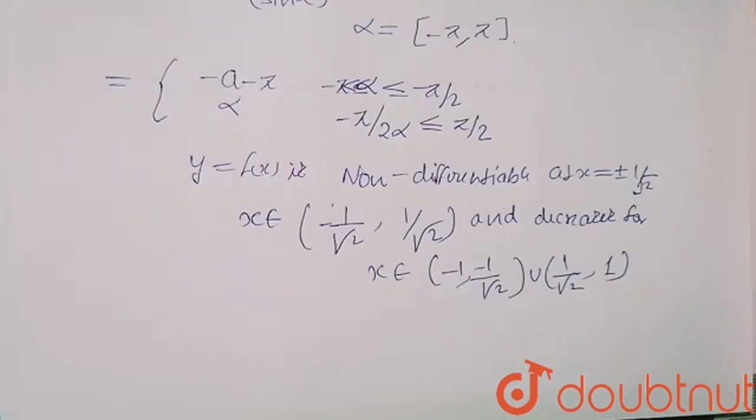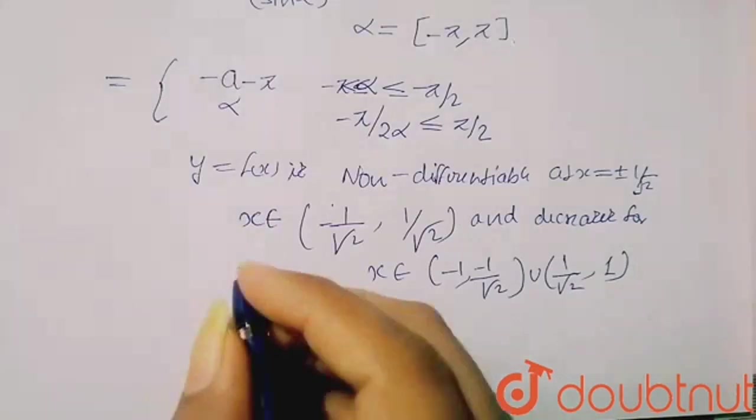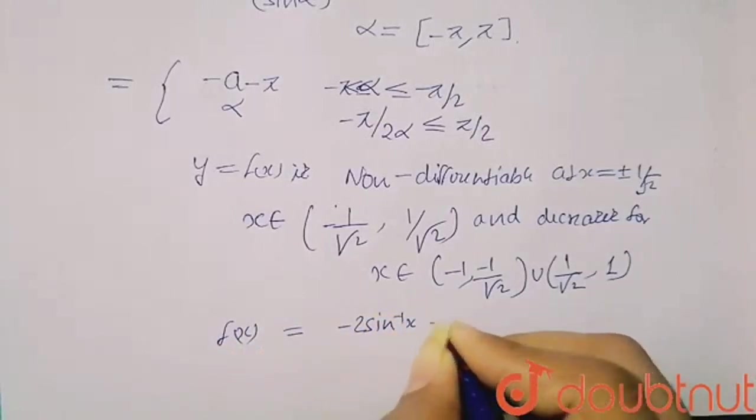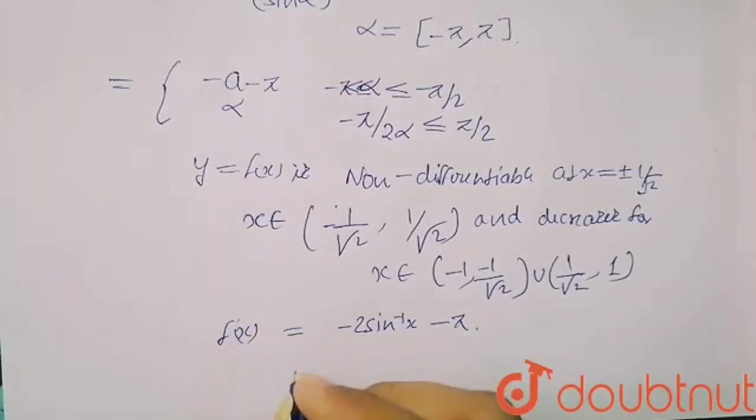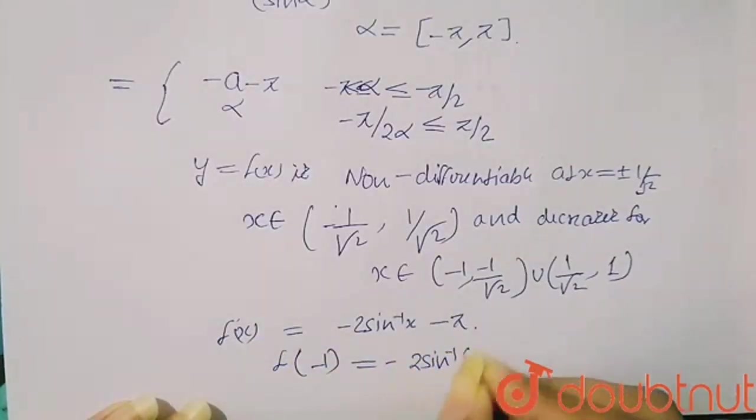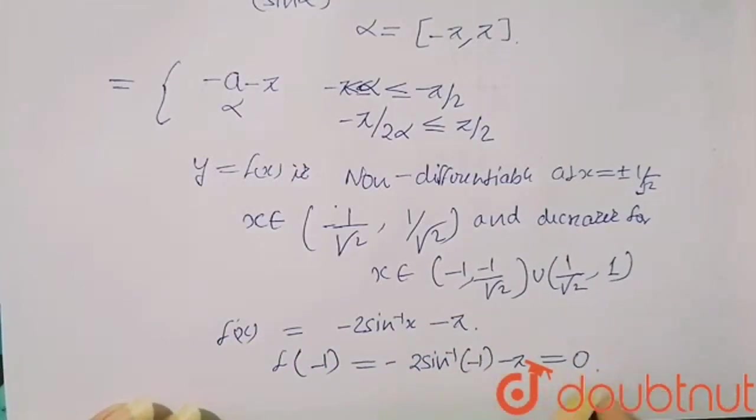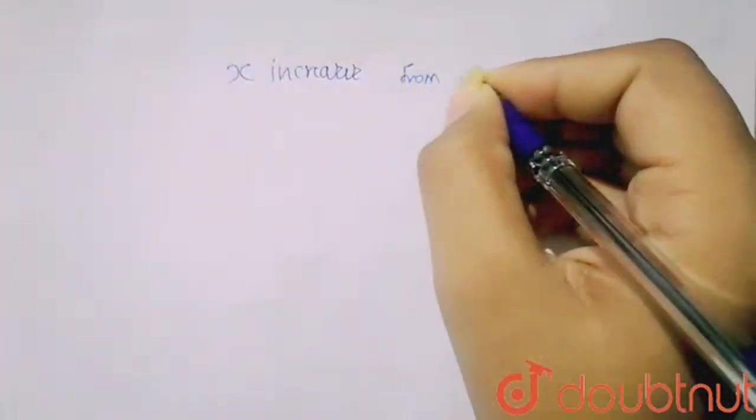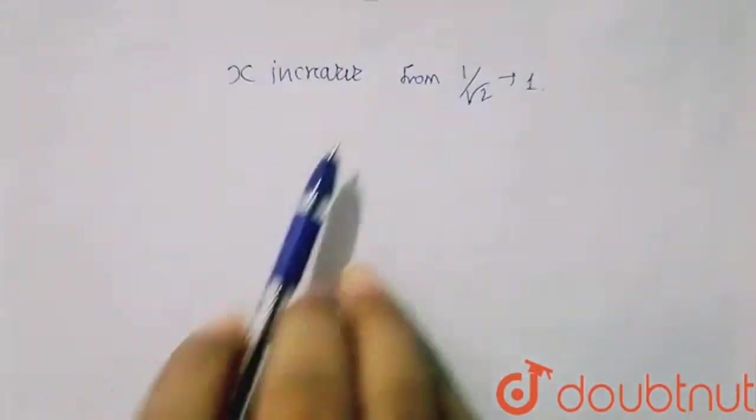Here f(x) equals minus 2 sin inverse x minus pi. When you calculate f dash x, f minus 1 will be equal to minus 2 sin inverse minus 1 minus pi, so this value will be equal to 0. The graph of this function increases from 1 by root 2 to 1. The simple thing which you have to understand about this function is that its value increases from 1 by root 2 to 1.